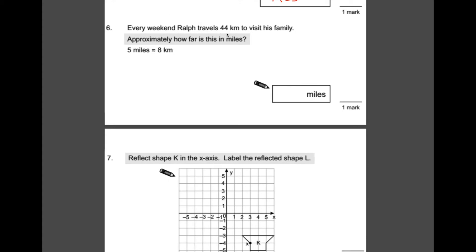Number 6. Every weekend, Ralph travels 44 kilometres to visit his family. Approximately, how far is this in miles? So, we need to convert the kilometres into miles. We know that 8 kilometres is 5 miles. So, let's see how many 8s we can fit into this first. We know that 5 eights are 40. So, we've got 5 lots of this. And we've still got 4 kilometres left. So, 5 times 5 is 25. So, 25 miles equals 40 kilometres. Now, we want 44. So, we need an additional 4 kilometres. So, what we could do is half this, half of 5 miles is going to be 4 kilometres. So, half of 5 is 2.5. That equals 4 kilometres. And now, we can add them together. 40 kilometres add 4 obviously makes 44 kilometres. So, that would be 25 miles add 2.5 miles, which is 27.5 miles.